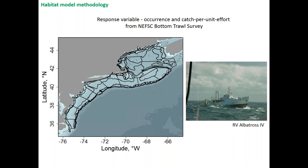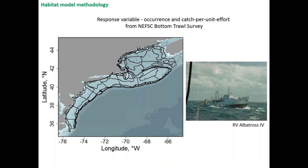The response variable is based on our bottom trawl survey — occurrence as a categorical variable, and catch-per-unit effort as biomass CPUE. The survey began in the fall in 1963 and in spring in 1968. The strata used to allocate trawl tows follow a random stratified design, with approximately 300 tows conducted per year per season distributed through the survey area. Pictured is the RV Albatross, one of the vessels that contributed greatly to this time series.